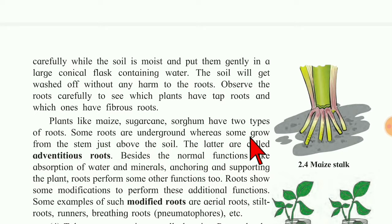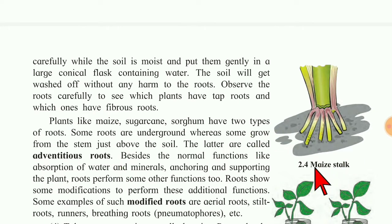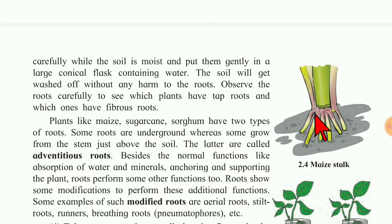Some roots are underground, whereas some grow from the stem just above the soil. The latter are called adventitious roots. See figure number 2.4 — here a maize stalk picture is shown. These are the roots which grow on the soil along with the stem, and such roots are called adventitious roots.